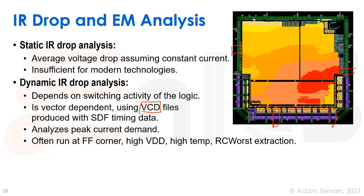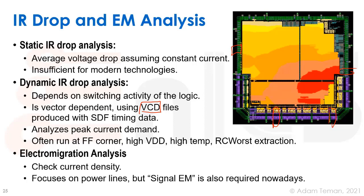Those are two types of IR drop analysis you should run to make sure you don't have IR drop problems and that your power grid is sufficient. The electromigration analysis is usually run in a similar type of tool using similar algorithms. Here we're checking that we don't have too much current running through the different interconnect layers, because if we have a lot of current, eventually as a reliability problem the current will cause shorts or opens due to electromigration.